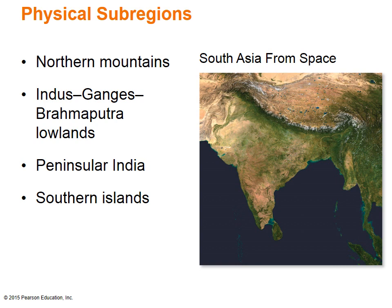The third region is Peninsular India. This area jets southward from the Indus-Ganges Plains and contains the Deccan Plateau between the western and eastern Ghats, which are lower uplands on either side of southern India. Soils are poor or average over much of the Deccan Plateau. The fourth region is the southern island of Sri Lanka, which sits mainly in the coastal plain, and the Maldives, a chain of more than 1,200 flat, low coral atoll islands that are sparsely populated.